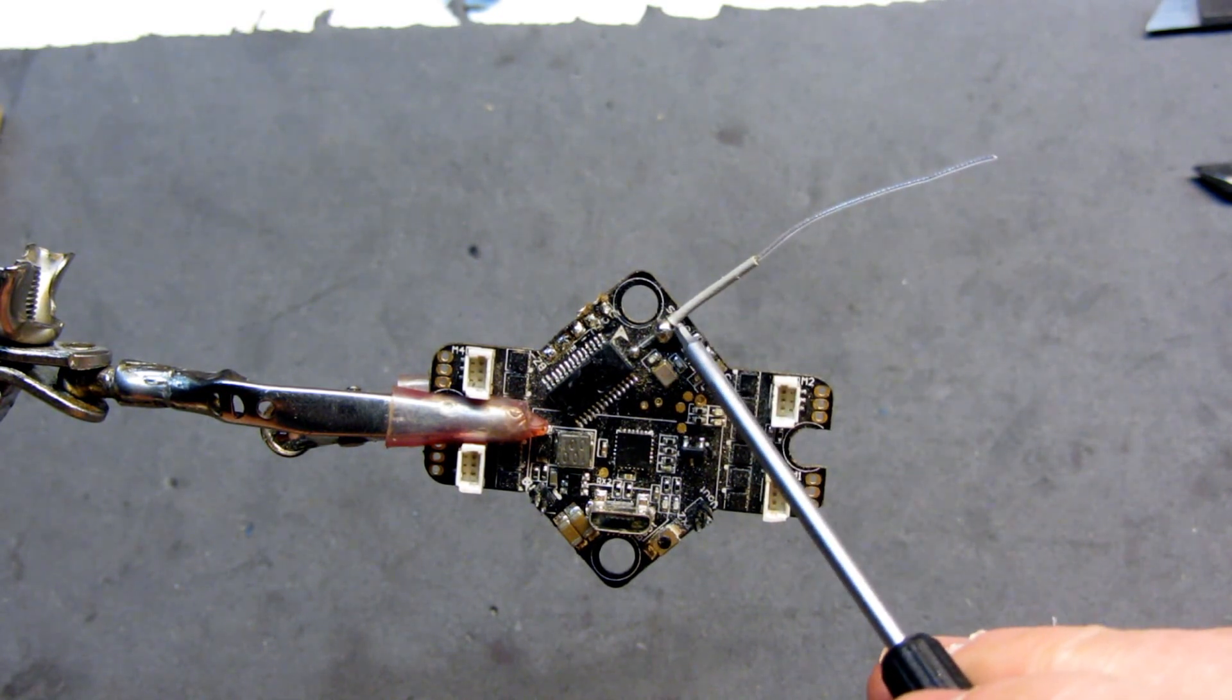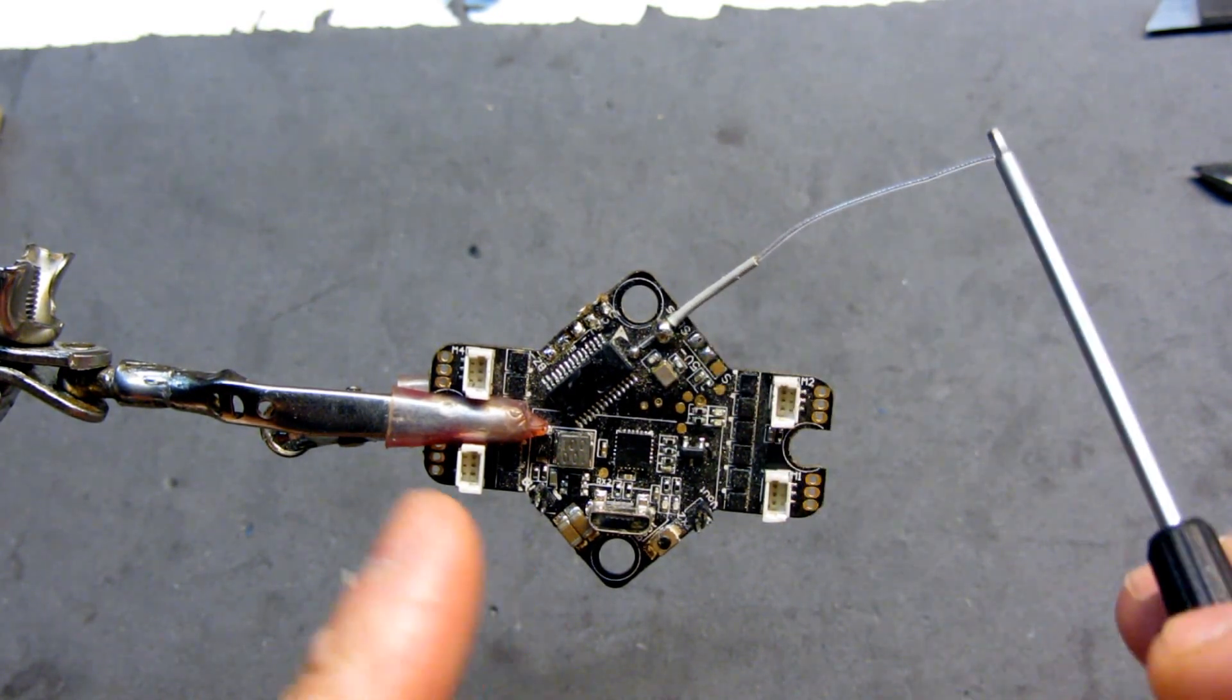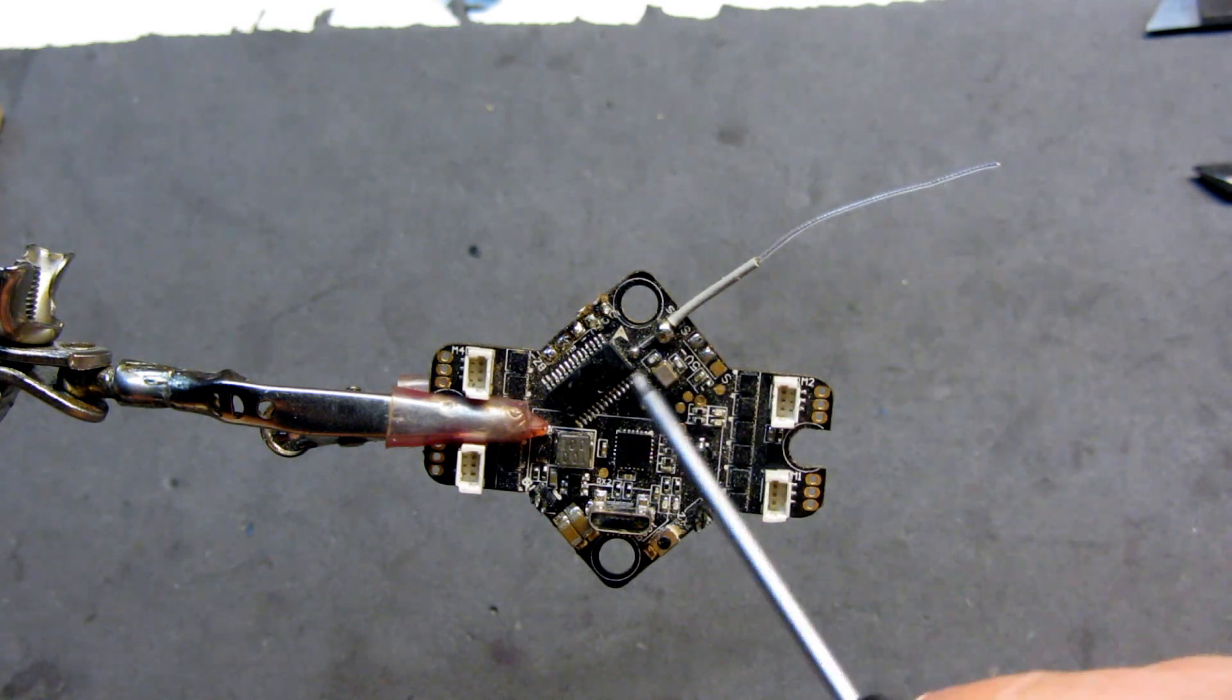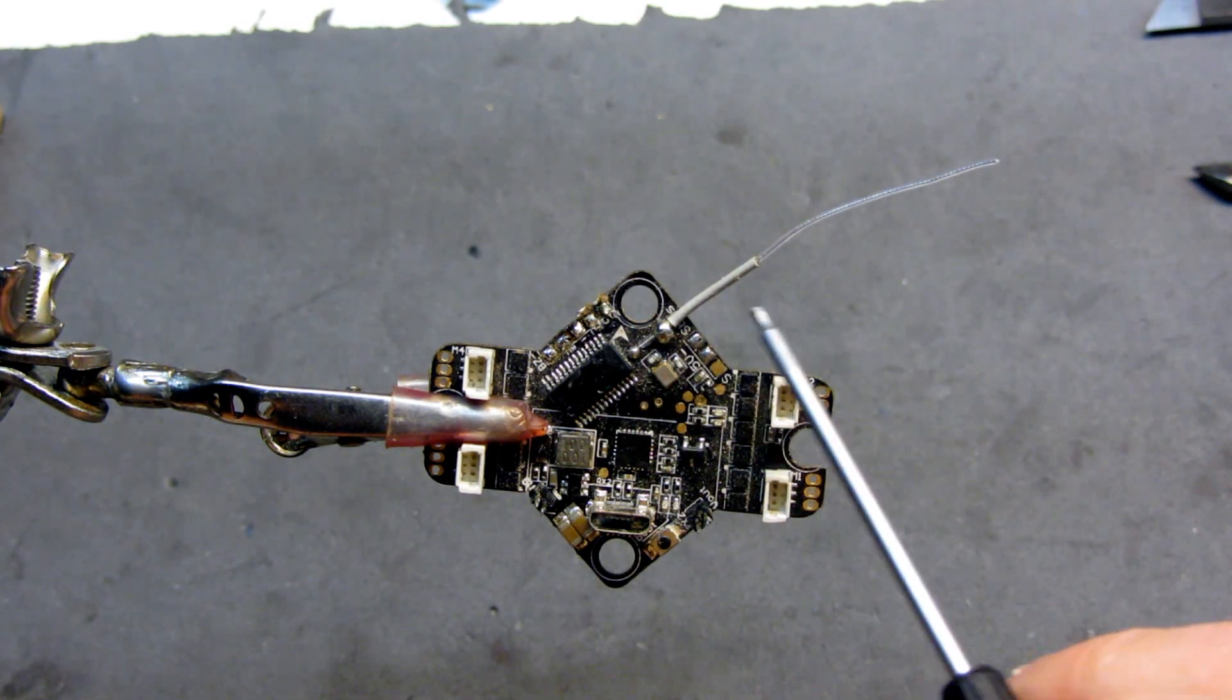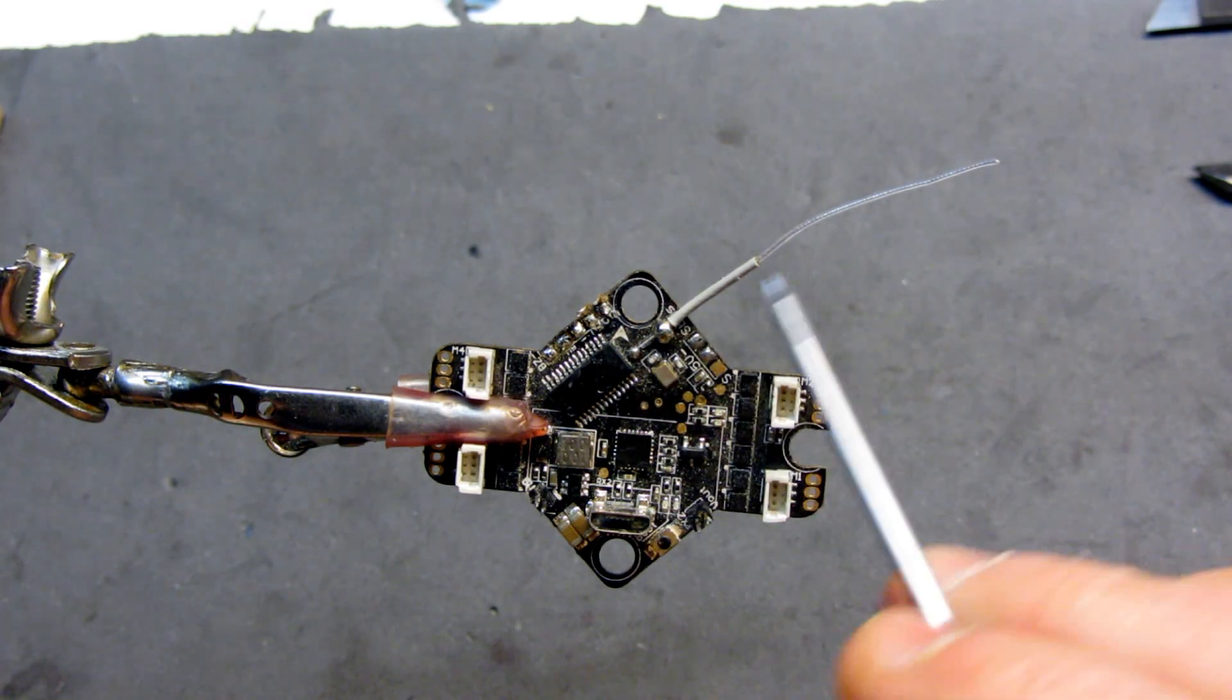Anything down further is going to be shielded, so it doesn't really matter the length of this antenna. What matters is the length of this active element. So let's go ahead and get this antenna off, show you how to prep a new one and solder it back on.